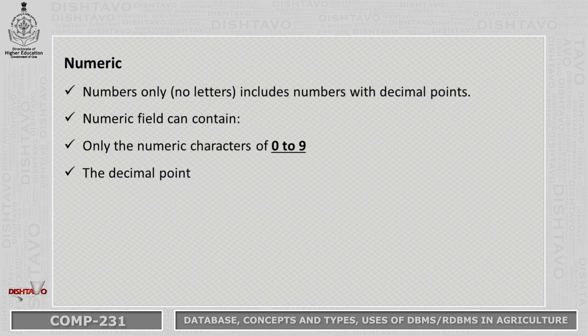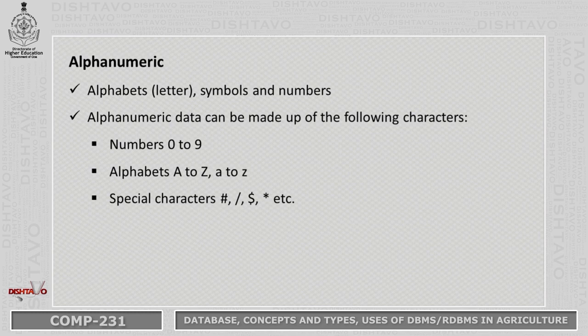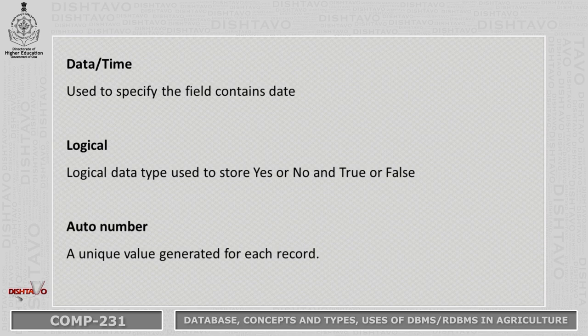Numeric data means digits from 0 to 9 that can be put into the DBMS software. Alphanumeric data consists of letters, symbols, and numbers — numbers from 0 to 9, alphabets from A to Z either caps or small, and special characters like hash, dollar, star, etc. Date/time data is used to specify that a field contains a date or time. Logical data is like yes/no or true/false. Auto number is a unique value generated for each record, also accepted by DBMS.